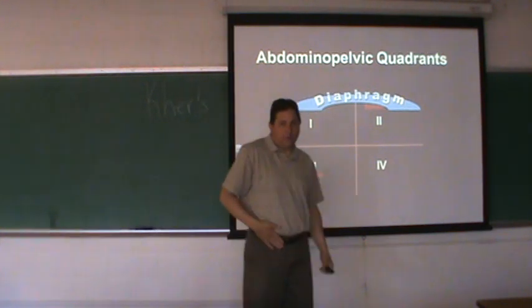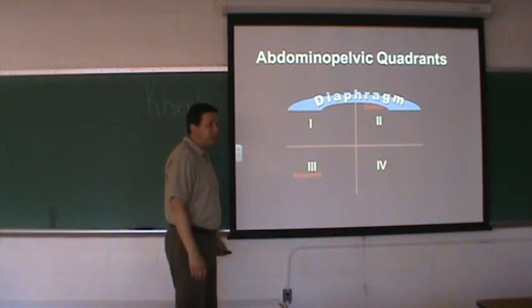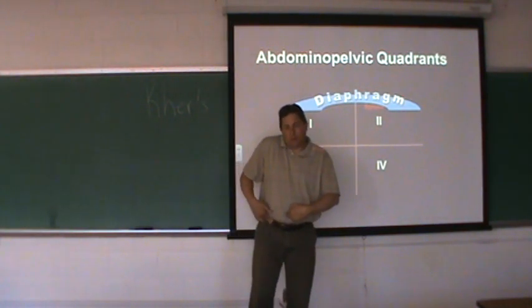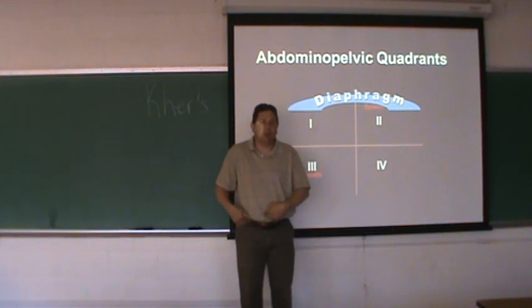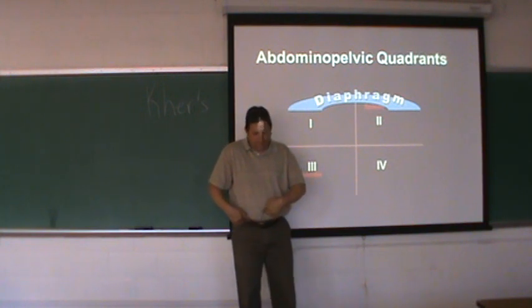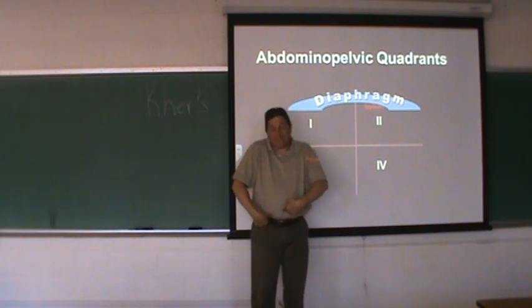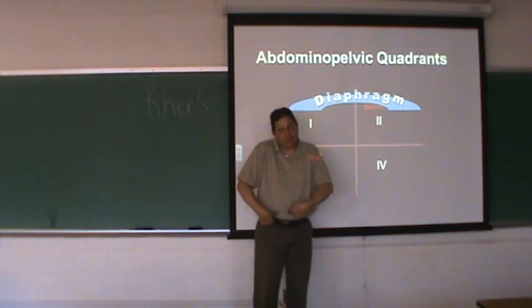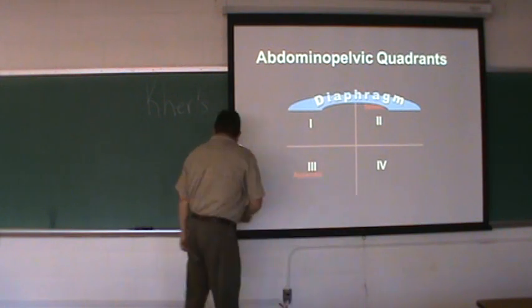The appendix is in the lower right quadrant. One way to find where your appendix is: find your belly button and find the hip bone on the front of your body — we call that the ASIS, anterior superior iliac spine. If you draw an imaginary line from your belly button to your ASIS, go two-thirds of the way down that line from the belly button toward the ASIS, then come about a thumb's width above — that's where your appendix is located.